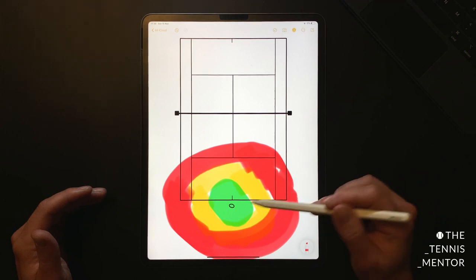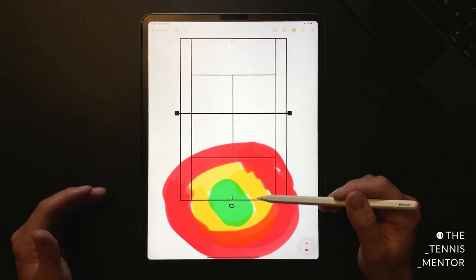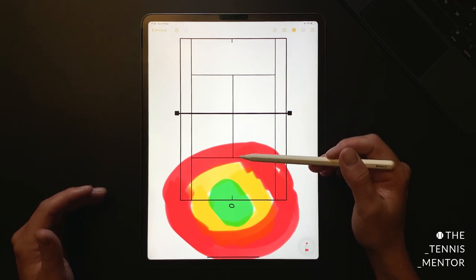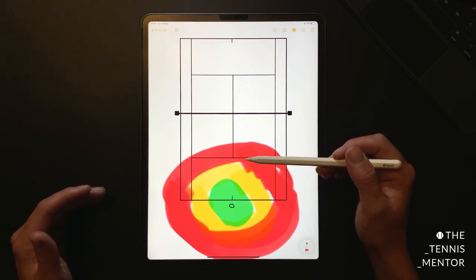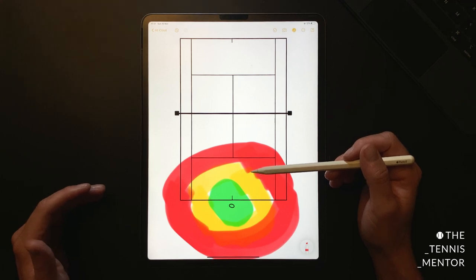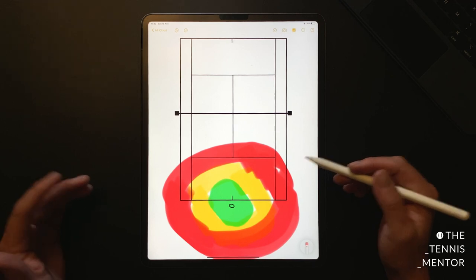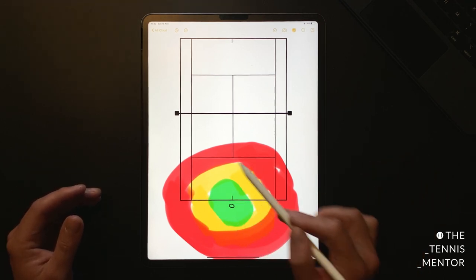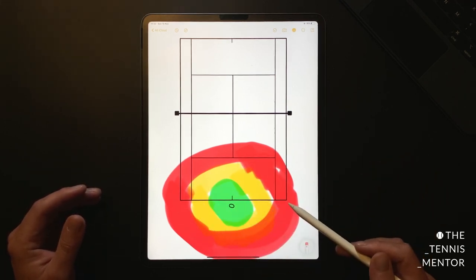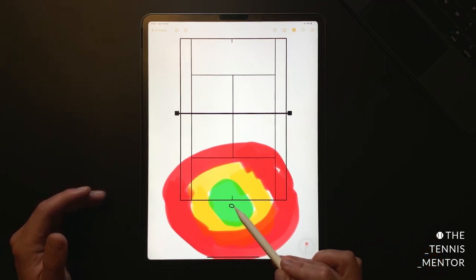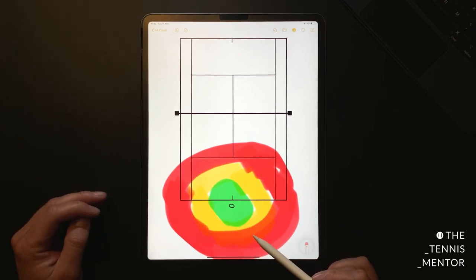And your defend zone may look a little bit more like this. Anytime you're stretched outside of your comfort zone you may be stretched out wide, you may be pushed backwards, you may be pushed in for a really short ball that you're struggling to pick up. This may cause you to defend or hit a more defensive shot. If you're a professional tennis player your green zone and your yellow zone may be slightly larger. If you're a beginner or somebody newer to tennis then your comfort zone may be a lot smaller and you may find that you have to defend from a position inside of the court because you're out of position more often.